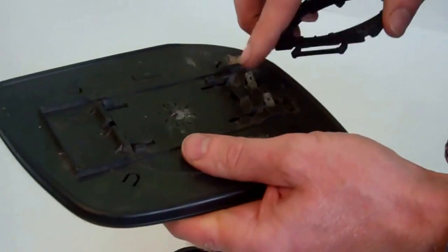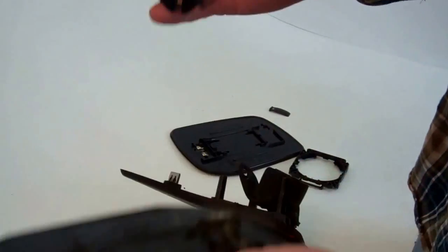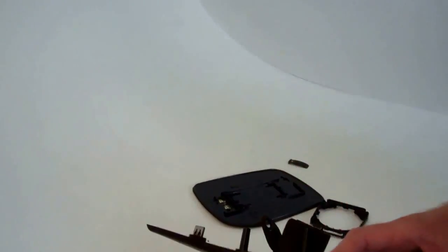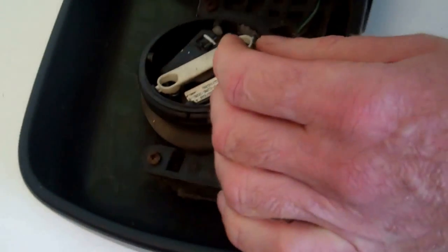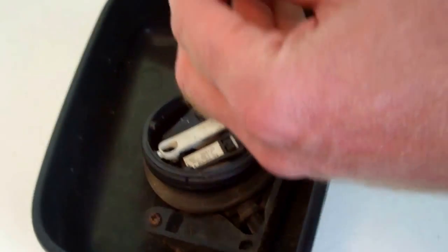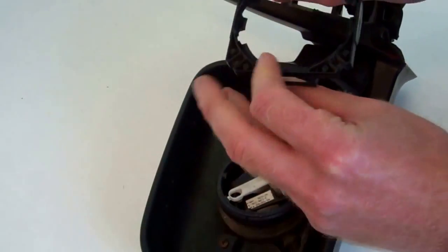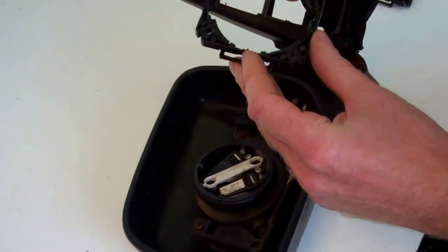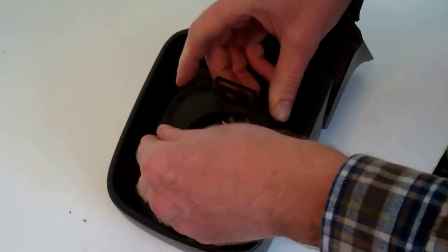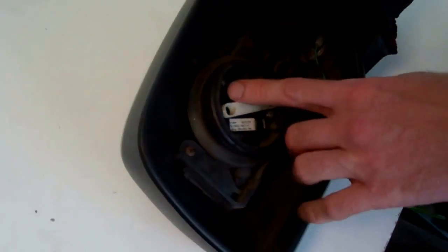So you've got two parts. You've got the mirror glass back and then you've got this sort of interposer part. Now this interposer part actually fits onto this circular part. The key to it is, I believe it can go either way up, but it's got a little groove.